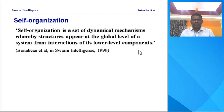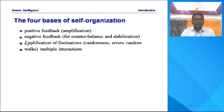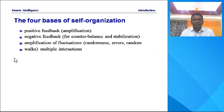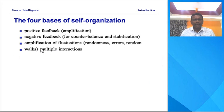The four bases of self-organization are: positive feedback — that is called amplification; negative feedback — that is for counterbalance and stabilization; amplification of fluctuations — that is randomness, errors, random walks; and multiple interactions.